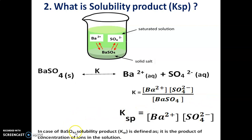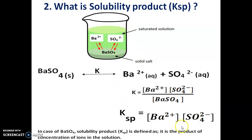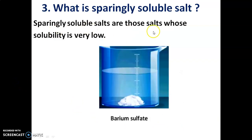In the case of barium sulfate, the solubility product KSP is defined as the product of concentration of ions in the solution. KSP equals concentration of Ba²⁺ into concentration of SO₄²⁻ in the solution. This is called the solubility product.